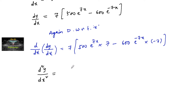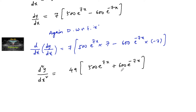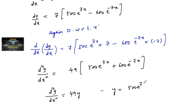Taking out the 7 common again gives 49 times of 500e to the power of 7x plus 600e to the power of minus 7x, which is our original function y. So d²y/dx² is equal to 49 times of y, since y equals 500e to the power of 7x plus 600e to the power of minus 7x. Hence proved. Thank you.